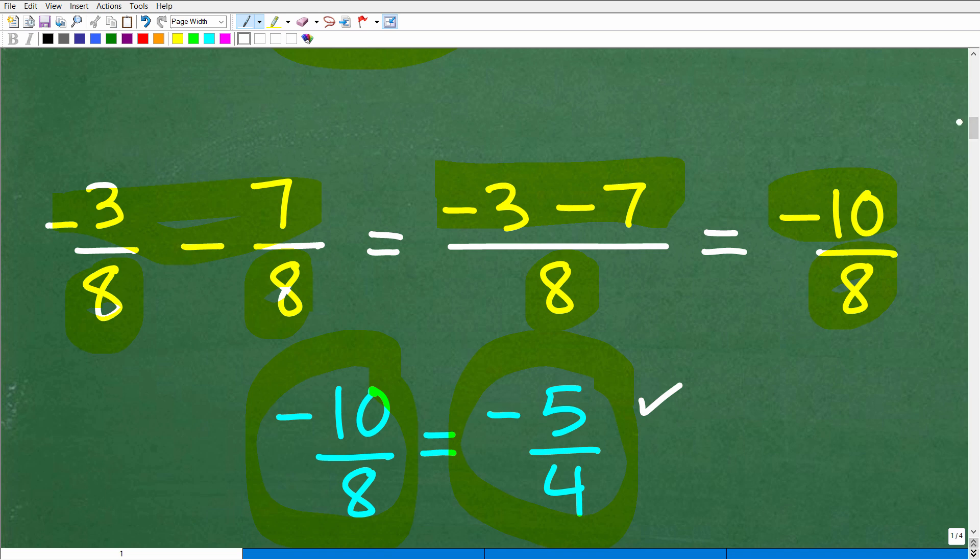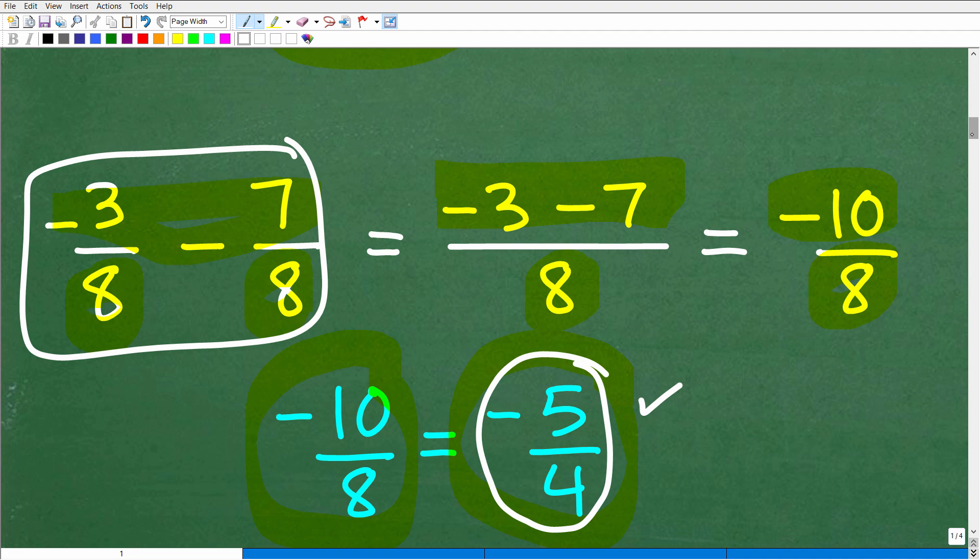Also, I have a ton of videos on all these topics on my YouTube channel as well. Okay, so when we subtracted these two fractions, we got negative 10 over 8, but really when we reduce that down, we have negative 5 over 4.